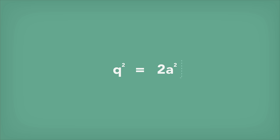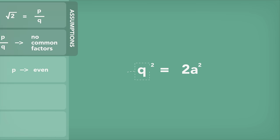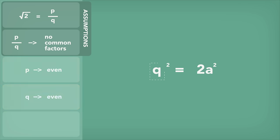Once again, 2 times any number produces an even number, so q squared must have been even, and q must have been even as well, making both p and q even.